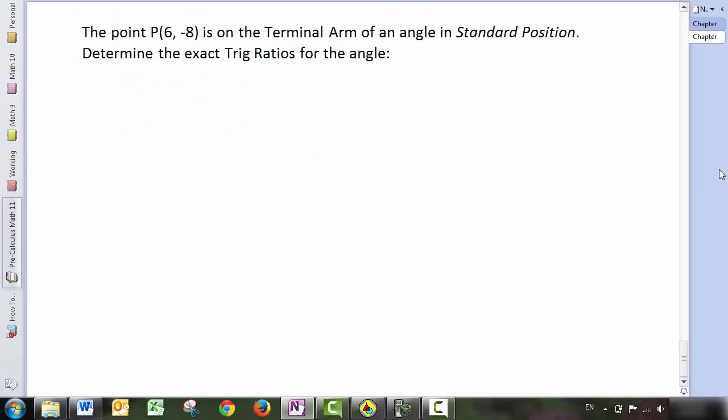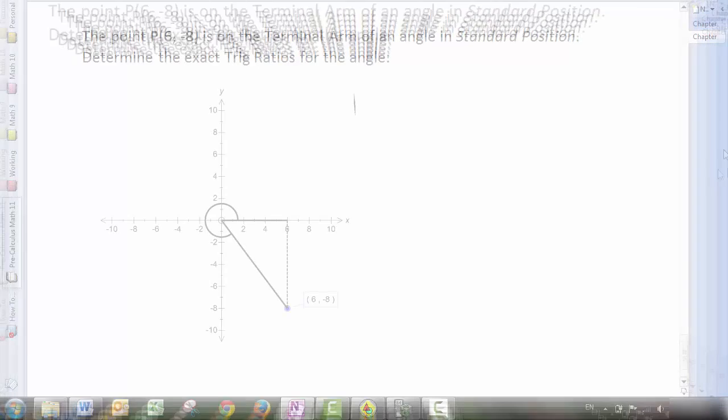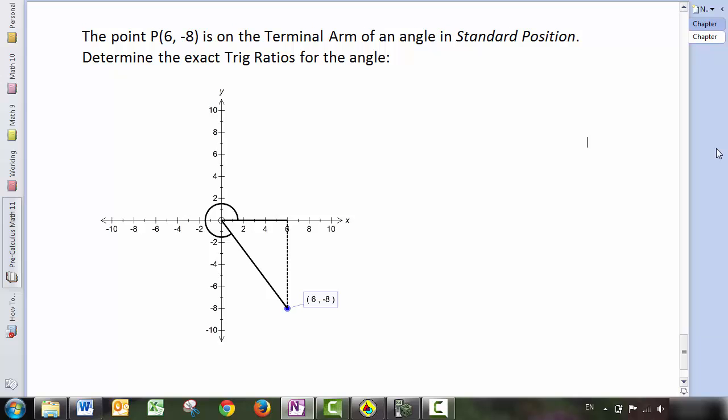Now let's do some examples here. So the point P (6, -8) is on the terminal arm of an angle in standard position. Determine the exact trig ratios for the angle. Well the first thing I would do is sketch this.